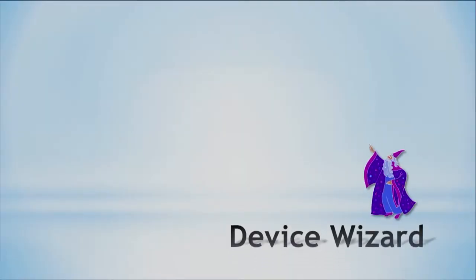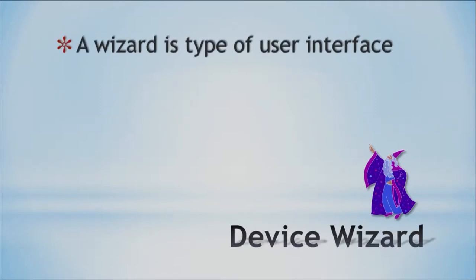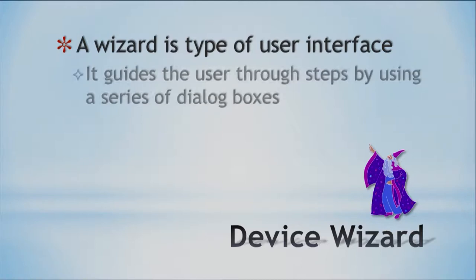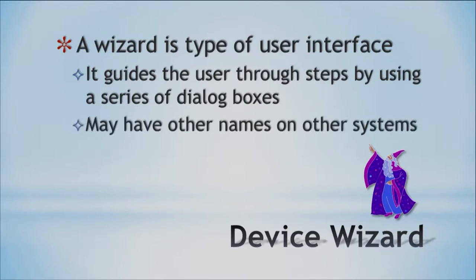We have something called a device wizard. A wizard is just a type of user interface — you might think of Gandalf or something like that with a big white beard. But it just facilitates or helps you do something, kind of like wizards did in Middle Earth. It guides you through a series of dialogue boxes, kind of like they were leading the hobbits. Different systems have different names for things, just to make things more confusing.